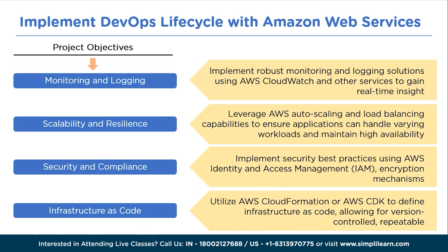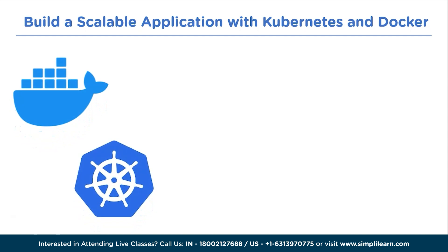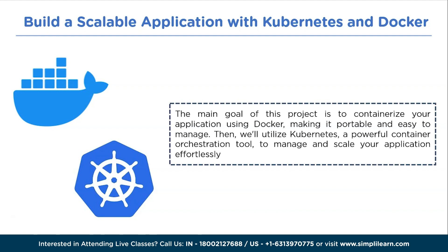The next intermediate project is to build a scalable application with Kubernetes and Docker. This project combines two powerful technologies — Kubernetes and Docker — to create a highly scalable and efficient application deployment system. The main goal is to containerize your application using Docker, making it portable and easy to manage, then utilize Kubernetes, a powerful container orchestration tool, to manage and scale your application effortlessly.